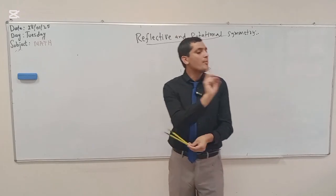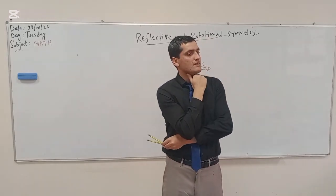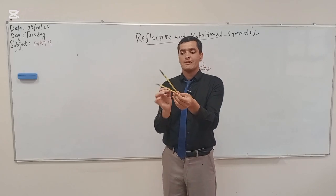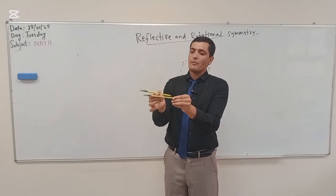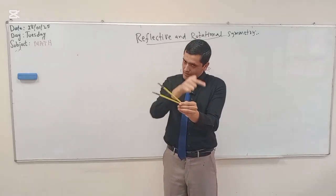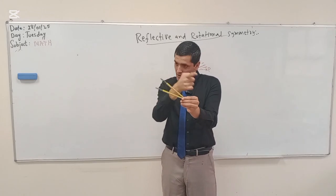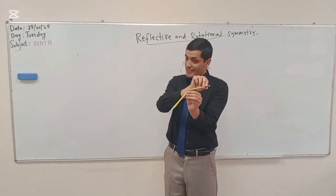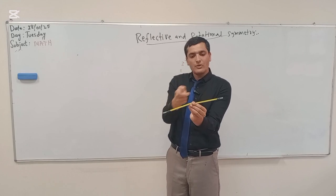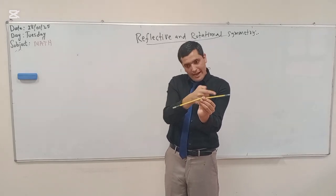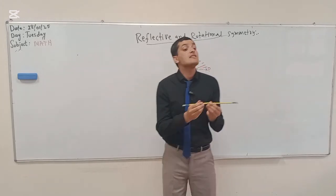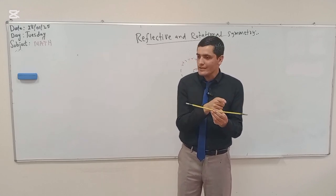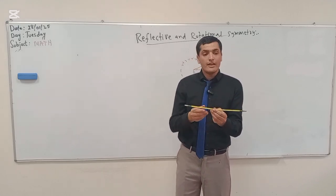What is half of 360? 180. When you move from here and complete a half circle, that is exactly a half revolution. So this angle — from here to here — is 180 degrees, not 90. This is the half revolution, and the angle is 180.